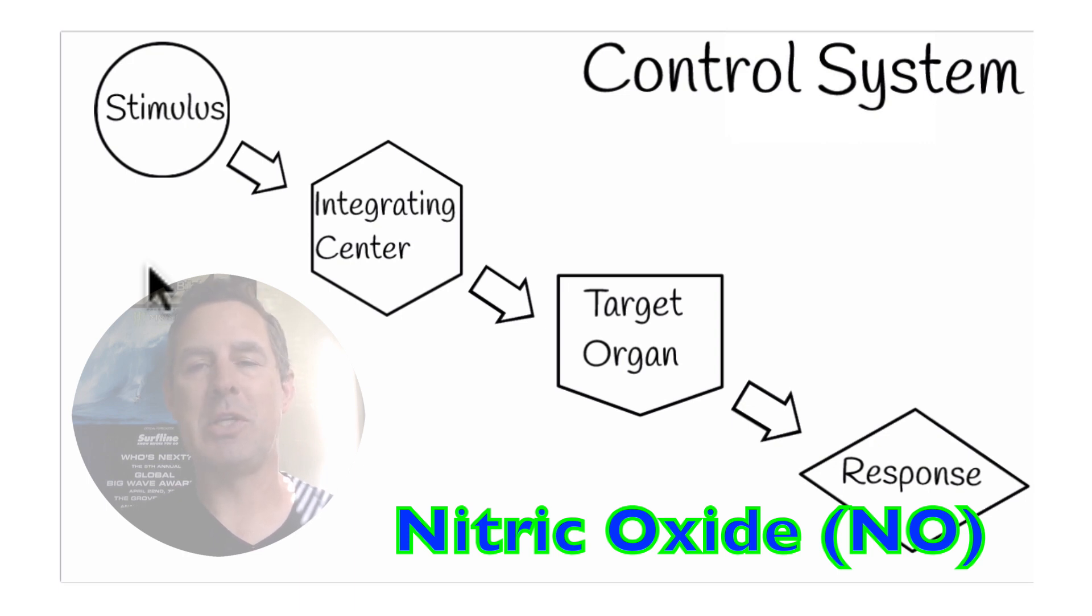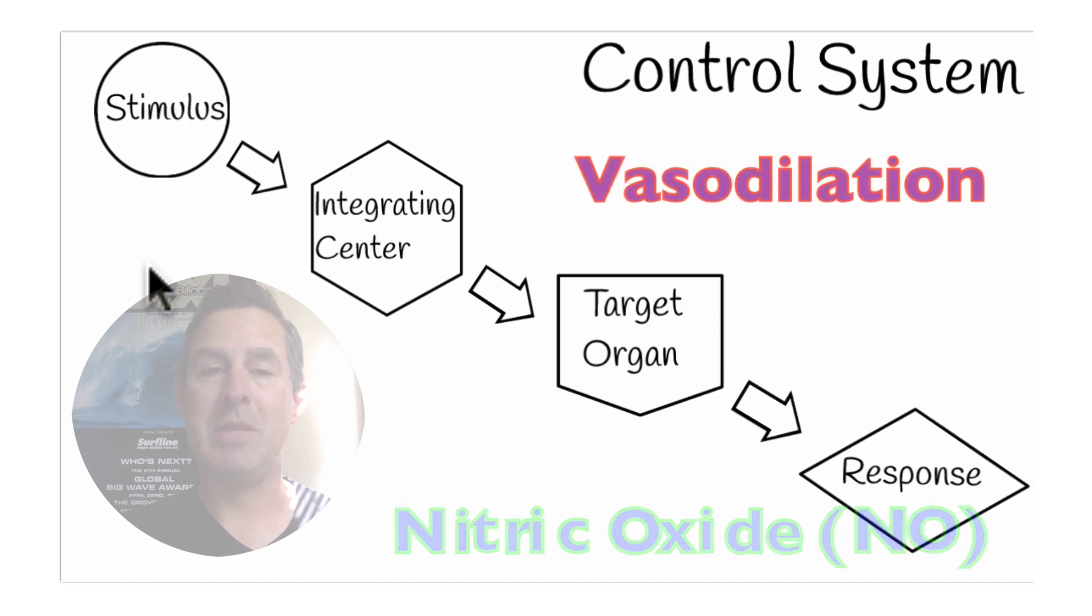Dilation of blood vessels will increase blood flow and as a result improve perfusion of oxygen to that specific area. That can all happen locally. That's a local control system that doesn't deal with the brain. So we have local control systems that undergo the process or carry out the process of negative feedback, and we have systemic control systems.